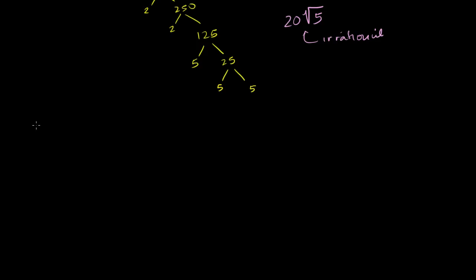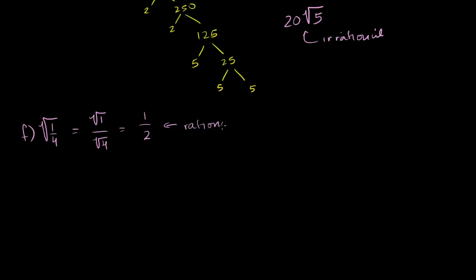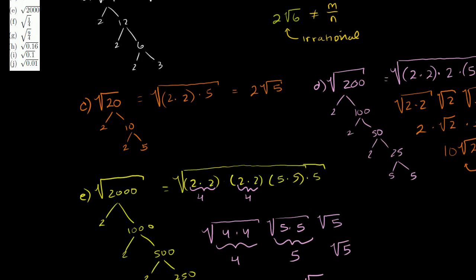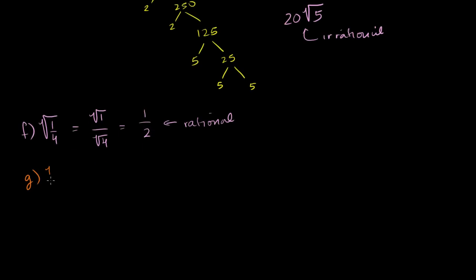Now let's do f: square root of 1/4. This is the same thing as the square root of 1 over the square root of 4, which is equal to 1 over 2 — clearly rational, it can be expressed as a fraction. Part g is the square root of 9/4, which equals the square root of 9 over the square root of 4, which is equal to 3 over 2.